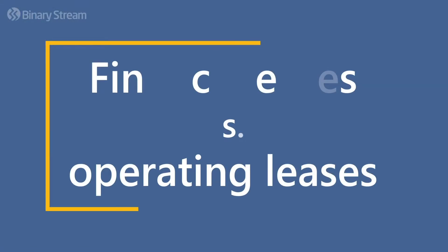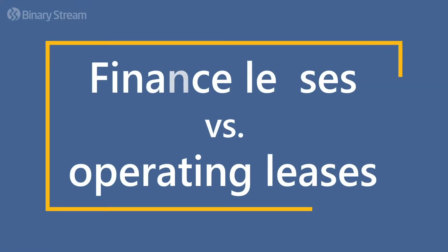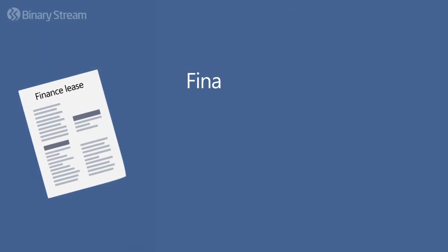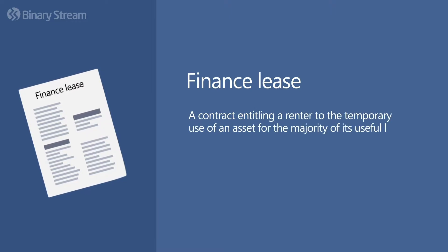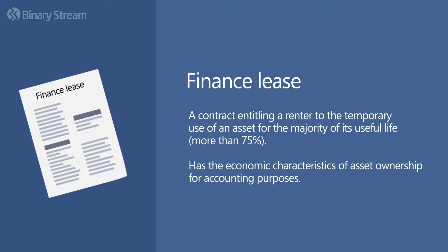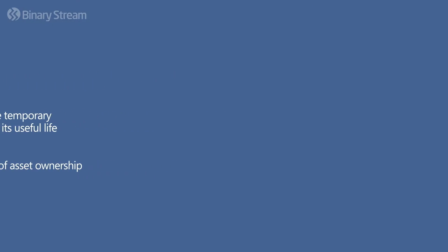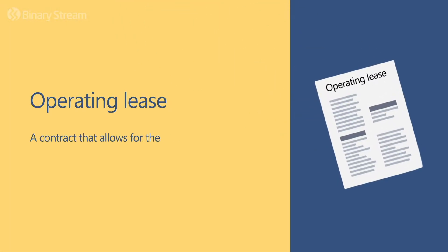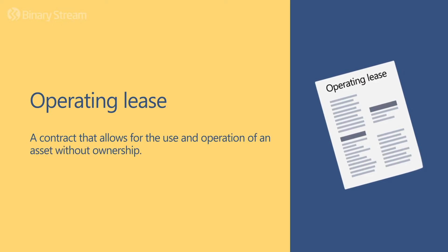Today we're going to look at the difference between finance versus operating leases. Before we get into that, let's look into the definitions for each. A finance lease allows the temporary use of an asset for the majority of its useful life, and is treated like asset ownership for accounting purposes. An operating lease is a contract that allows for the use and operation of an asset without ownership.